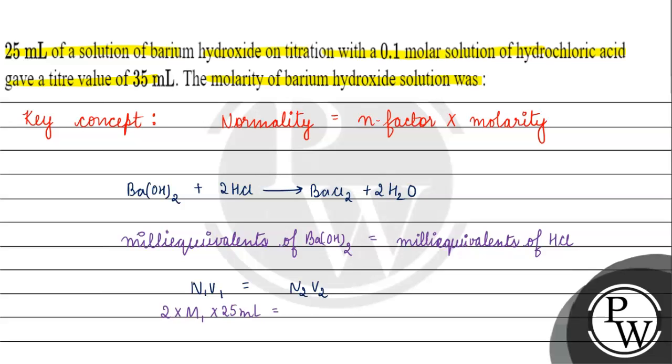This equals the normality of HCl, which is 0.1 molar, times 35 ml.